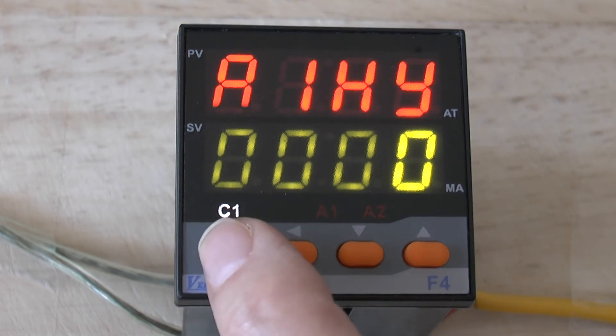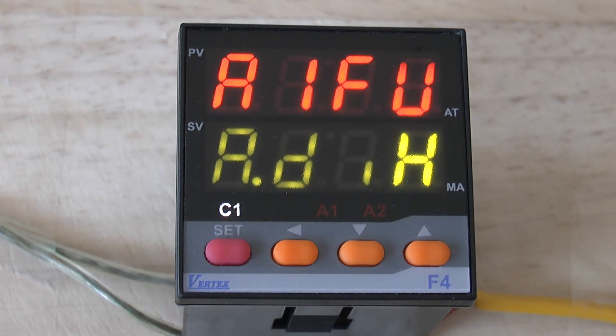The next parameter is the A1FU. This is the ALARM 1 function. Here you can choose different functions that will be used for this ALARM. For more information regarding these functions and the use of the ALARMS in general, please refer to the manual that was supplied with your controller or go to our website and look at the F4 user manual.